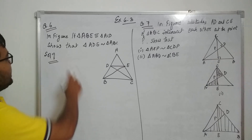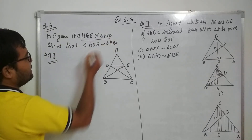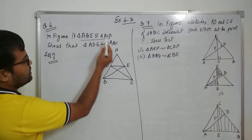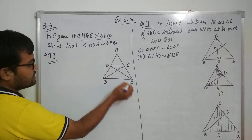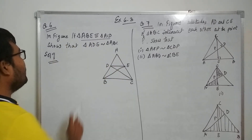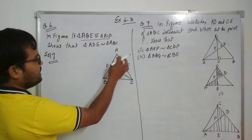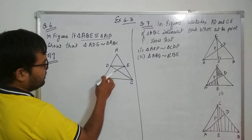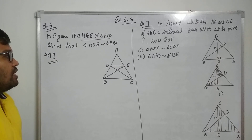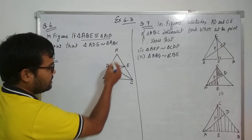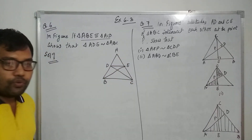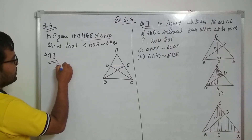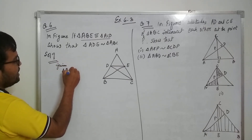In the figure, triangle ABE is congruent to triangle ACD — this is given. We need to show that triangle ADE is similar to triangle ABC. This is the smaller triangle ADE similar to ABC, and we need to show it. We will do it one by one.